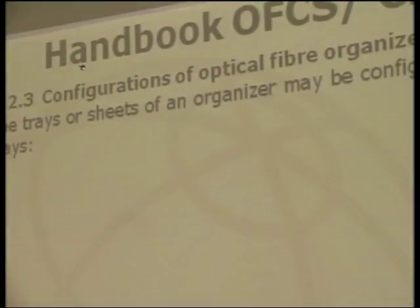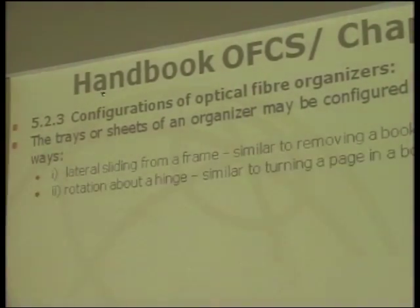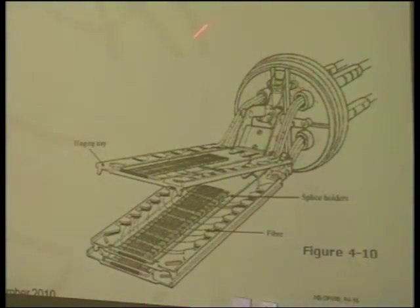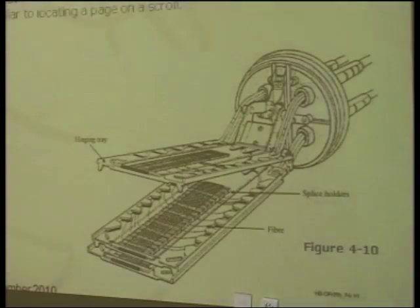In terms of configuration of the optical fiber organizer, trays or sheets may be configured in one of four ways: lateral sliding from the frame — like removing a book from a shelf; rotation over a hinge as shown in figure 4.10 — similar to turning the page of a book; lifting from a stack — similar to lifting a book from a stack; and unrolling — similar to locating a page on a roll. All movements of the organizer parts should proceed in one of these predetermined ways.